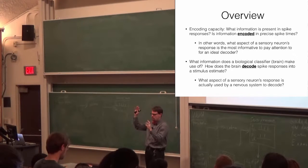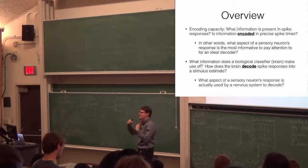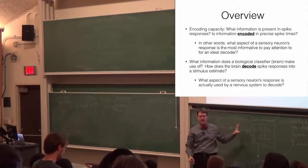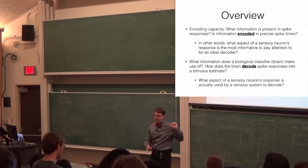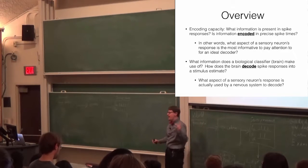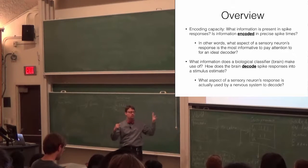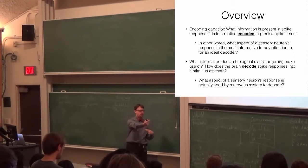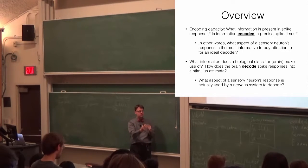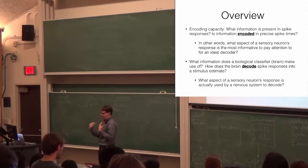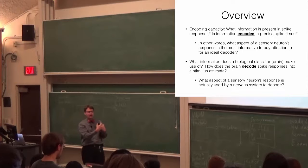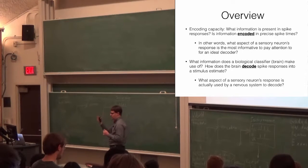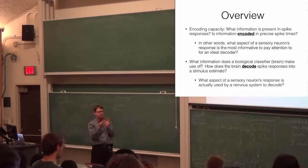We call this encoding capacity because we're letting the animal's sensors do the encoding. The top of the diagram is encoding, the bottom is decoding. We let the animal's nervous system convert stimuli into action potentials, and then ask: what facts about those action potentials are most helpful in figuring out what the stimulus was? That's question number one, which we started answering last Wednesday and will finish today, at least in the case of the leech experiment.